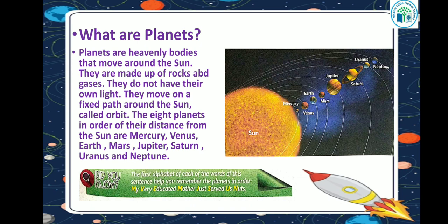The eight planets in order of their distance from the sun are: Mercury, Venus, Earth, Mars, Jupiter, Saturn, Uranus, and Neptune. Pluto, which was previously the ninth planet until 2006, is now considered only a dwarf planet. So our solar system now has only eight planets.